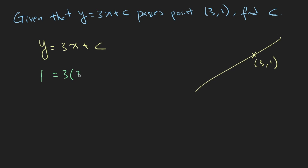1 is equal to 3 times 3 plus c. So c is equal to, this is 9, so if we bring the 9 over, we will have minus 8. So there you have it. So your y-intercept is minus 8.